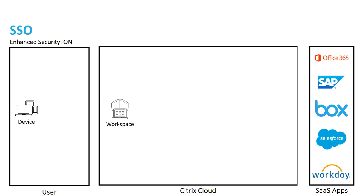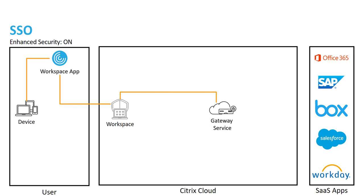Let's now change the scenario and enable enhanced security. The overall process to begin with is the same — the user launches Workspace app on their endpoint device, which contacts Workspace running in Citrix Cloud. You authenticate and get a list of your applications. When you select an application, the request goes to the gateway service. The gateway service responds with a one-time use URL and the preferred browser. Because enhanced security is enabled and we're using Workspace app, our preferred browser is now the embedded browser.